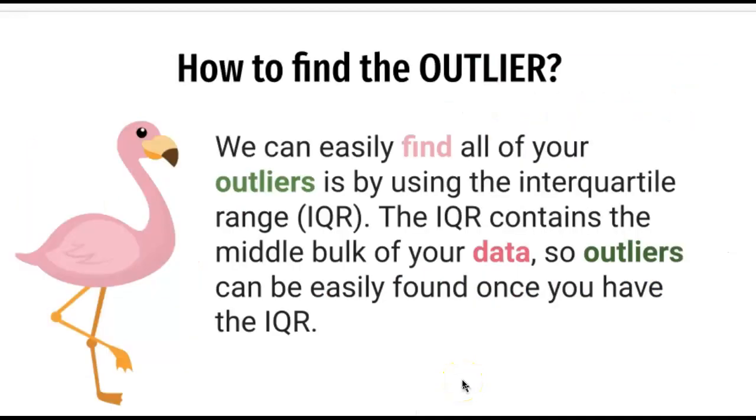Let's look at how we find them. How do we find this outlier in a group of data? Other than you can just look at it and see what is a number that is too far away, we can easily find all of your outliers by using the interquartile range or the IQR. And the IQR contains the middle bulk of your data, so the outliers can be easily found once you have that.